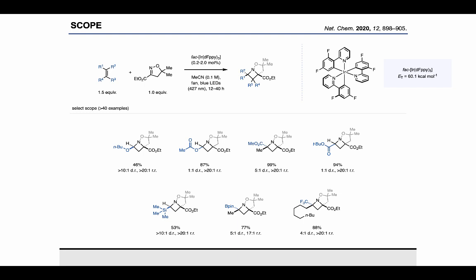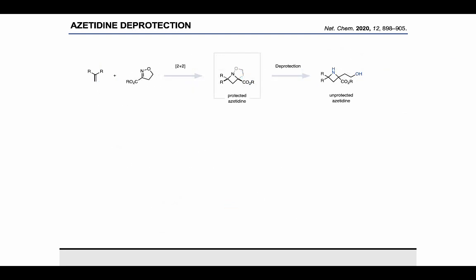Similarly, this allows us to incorporate functional handles directly at the azetidine ring, such as silanes, boronic esters, or trifluoromethyl groups, which could then be used for further functionalization. So this [2+2] cycloaddition reaction seemed to be quite general in scope.